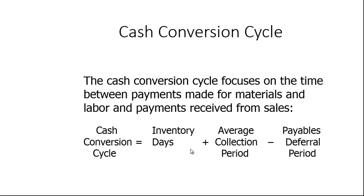Here you have inventory days. Once you produce something you're going to have inventory. Ideally you don't want the inventory sitting around for too many days, because it becomes obsolete — if it's a technology good, you know how quickly computers change — or it actually spoils if you're talking about something like produce. You also have a collection period. Most of what's sold is sold on an accounts receivable basis. So ideally you'd like to get paid as quickly as possible, and oftentimes companies will offer their customers discounts for paying quickly.